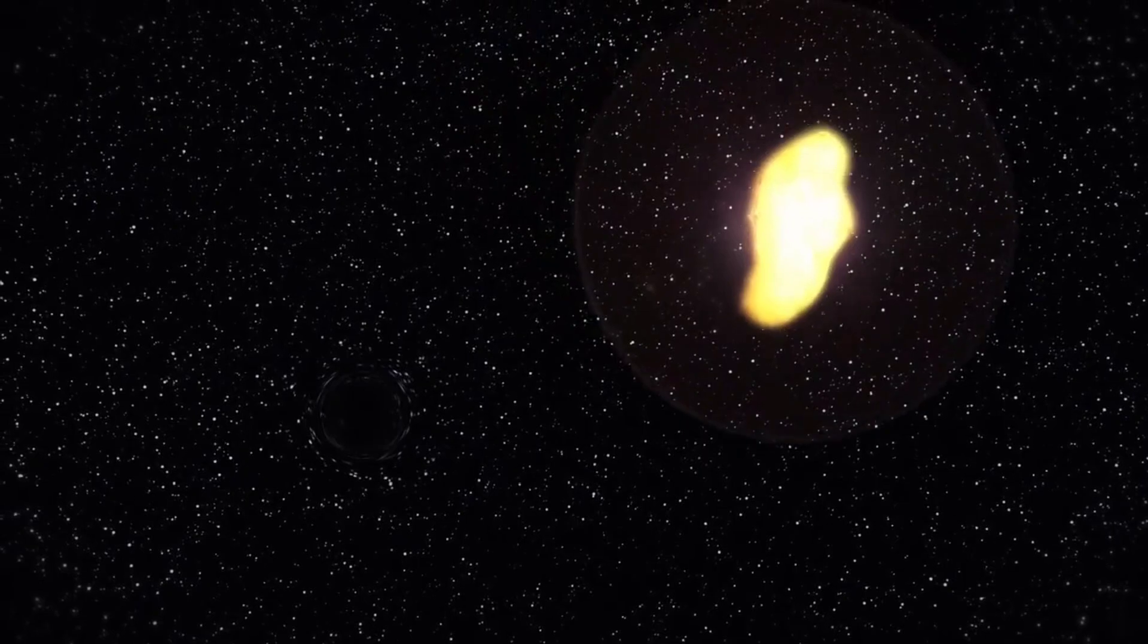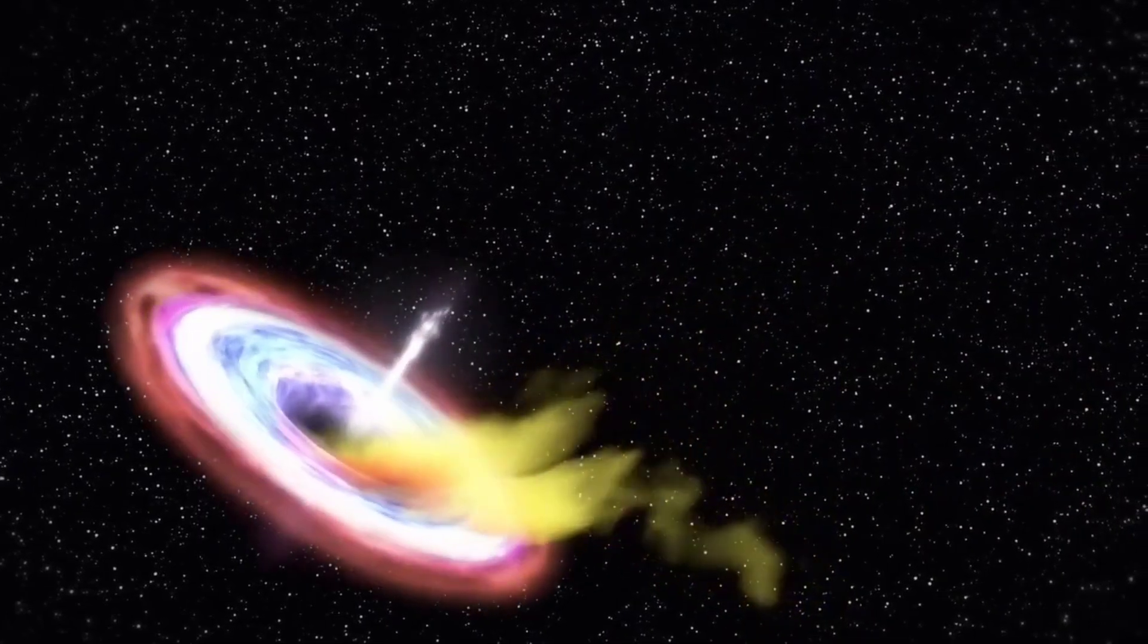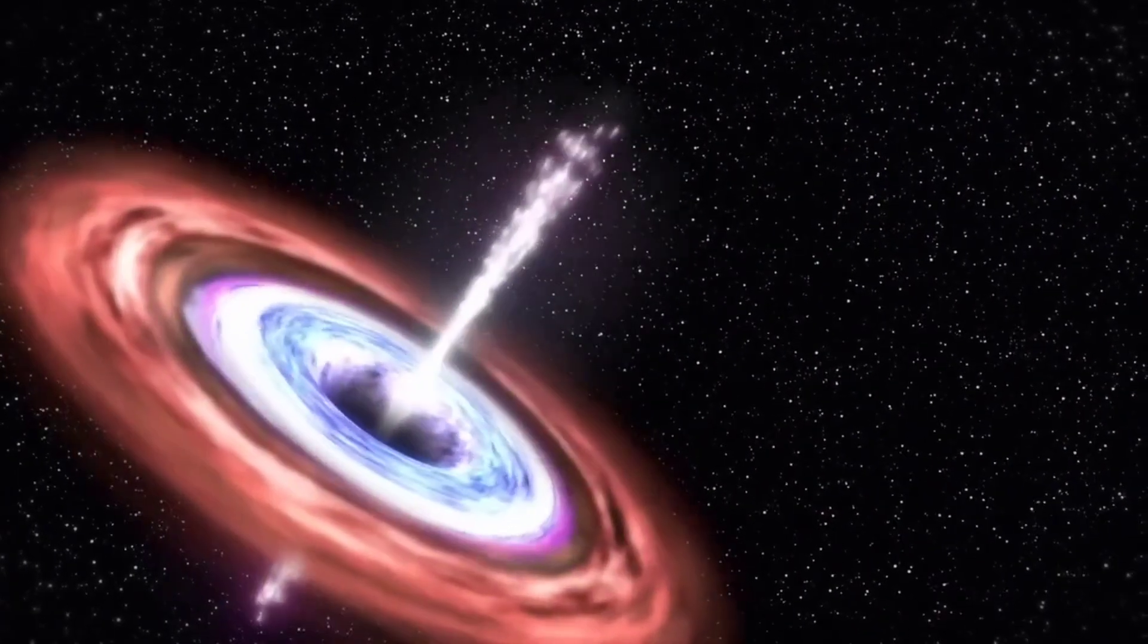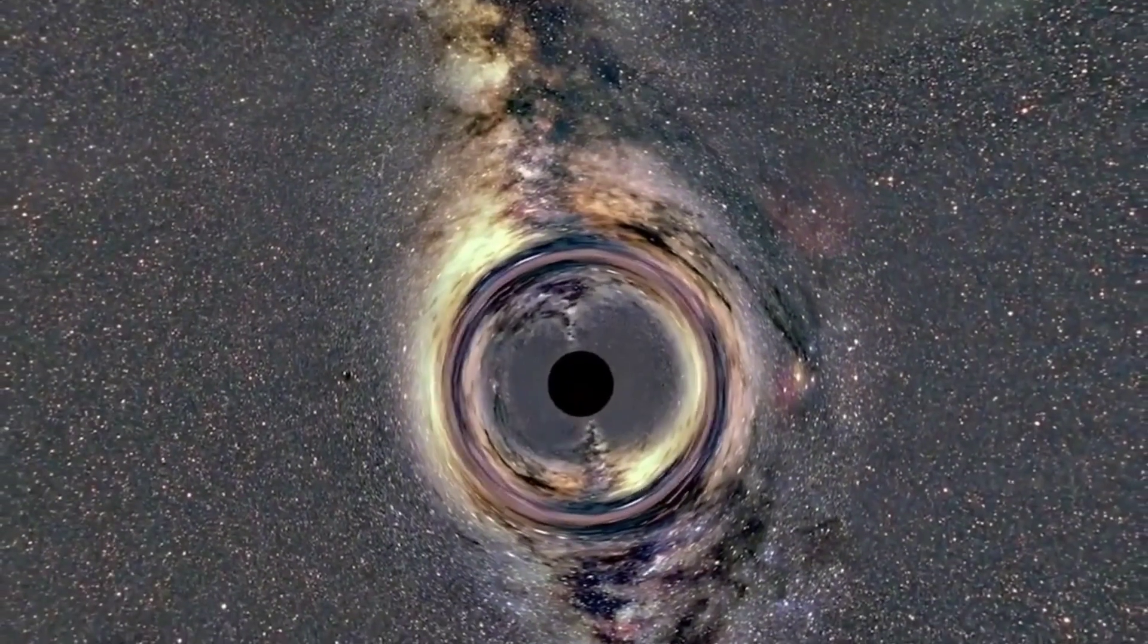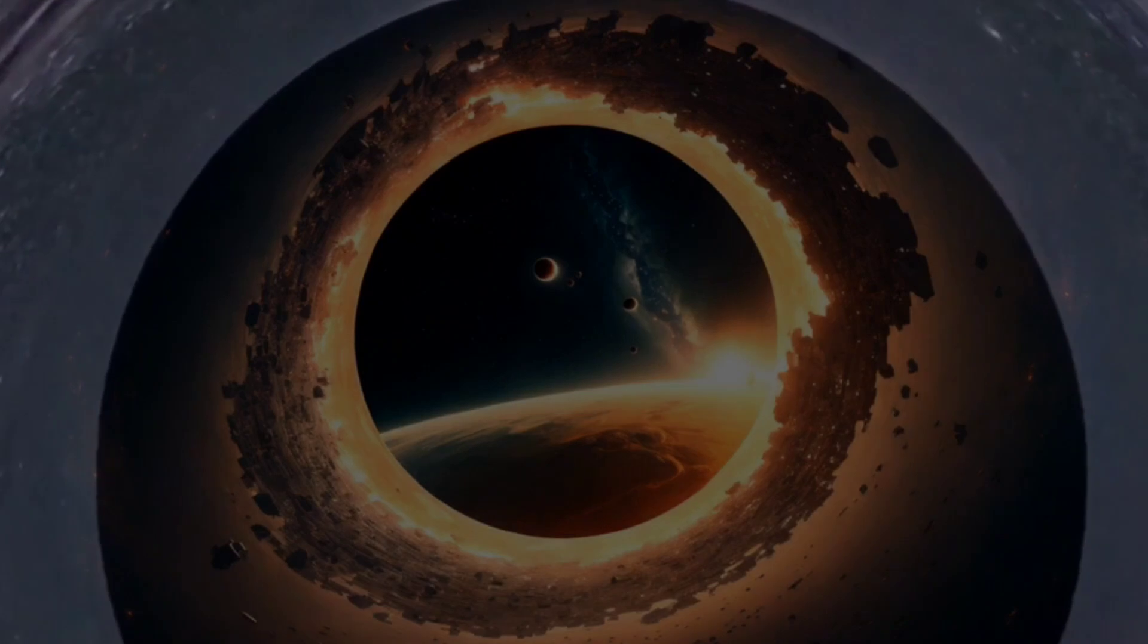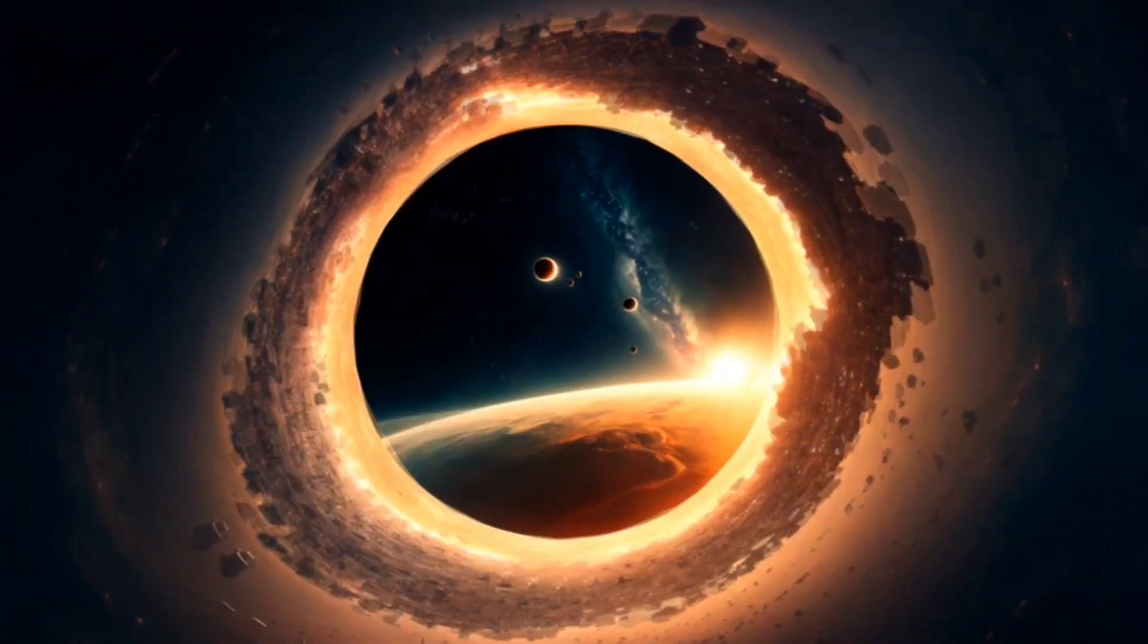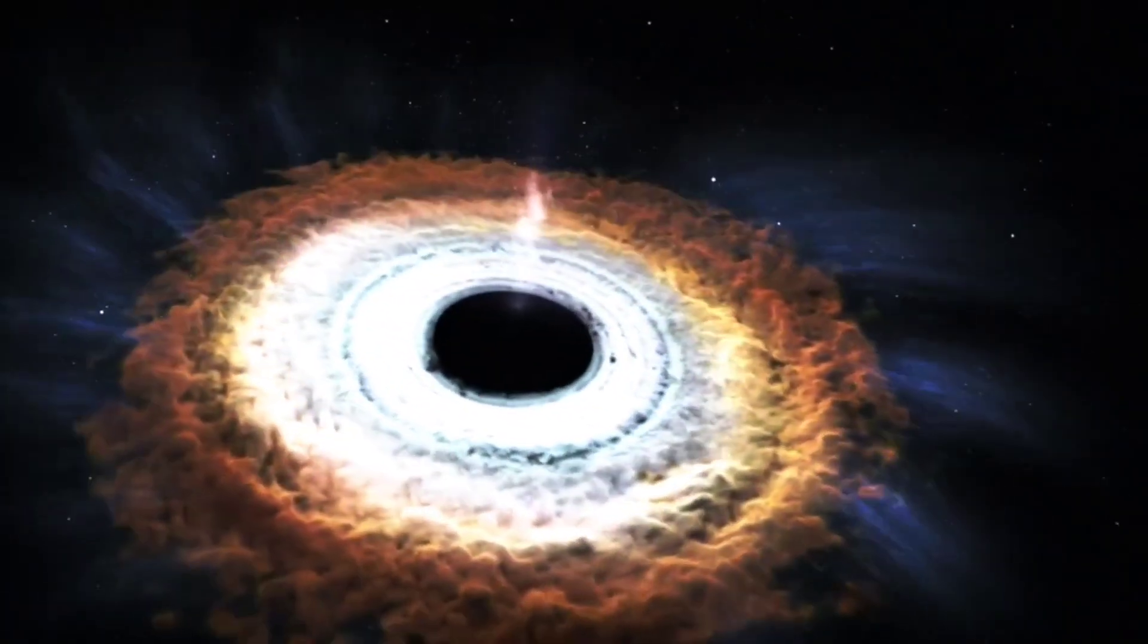The black holes will consume the remaining matter and radiation in the universe, such as the degenerate remnants of stars, the rogue planets, the interstellar gas and dust, and the cosmic microwave background. The black holes will also interact with each other, forming larger and more massive black holes, or emitting gravitational waves that ripple through time and space. It is also the era when the black holes will evaporate and decay, leaving behind only elementary particles and photons. It is the era when the universe will approach a state of maximum entropy and minimum complexity, and when the black holes will be the last bastions of order and information.